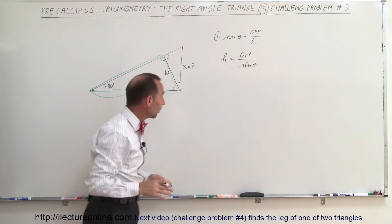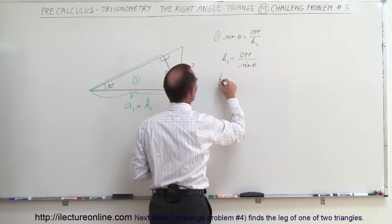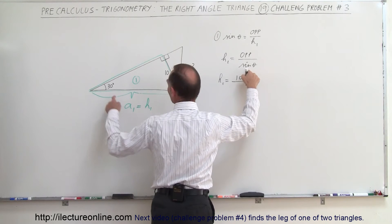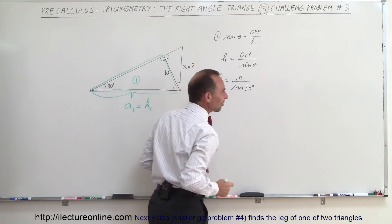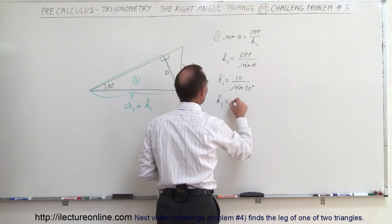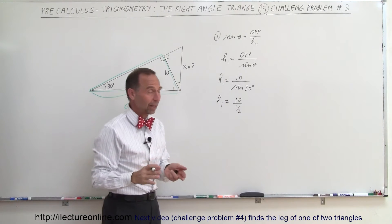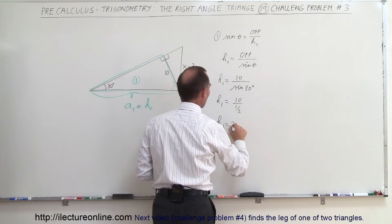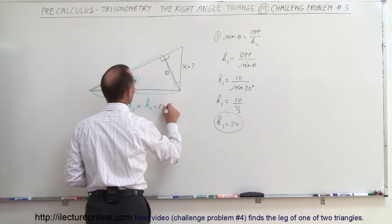Now all we have to do is plug in the numbers we know. The opposite side is 10, so h1 equals 10 divided by the sine of theta — in this case the sine of 30 degrees, which equals one half. So h1 equals 10 divided by one half. Dividing by one half is the same as multiplying by 2, so h1 equals 20.